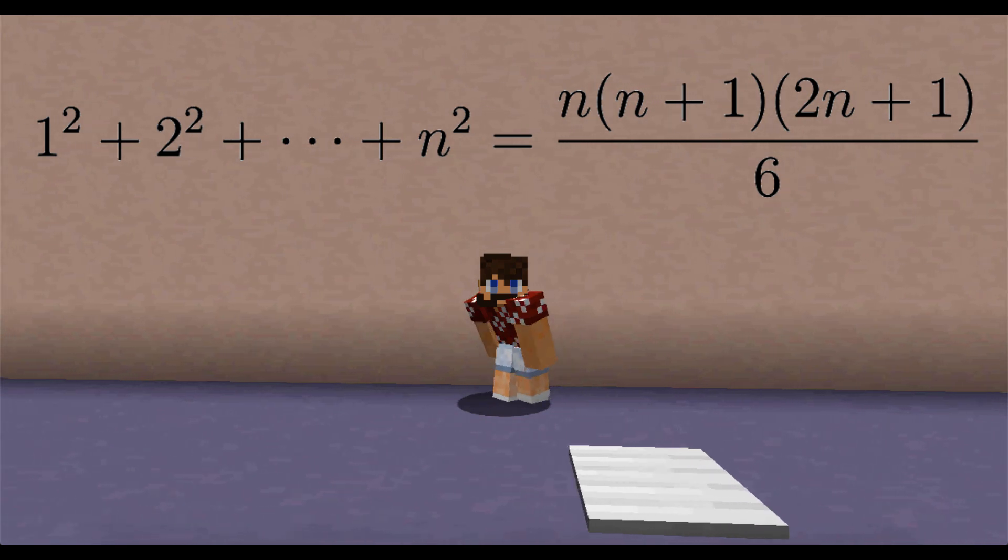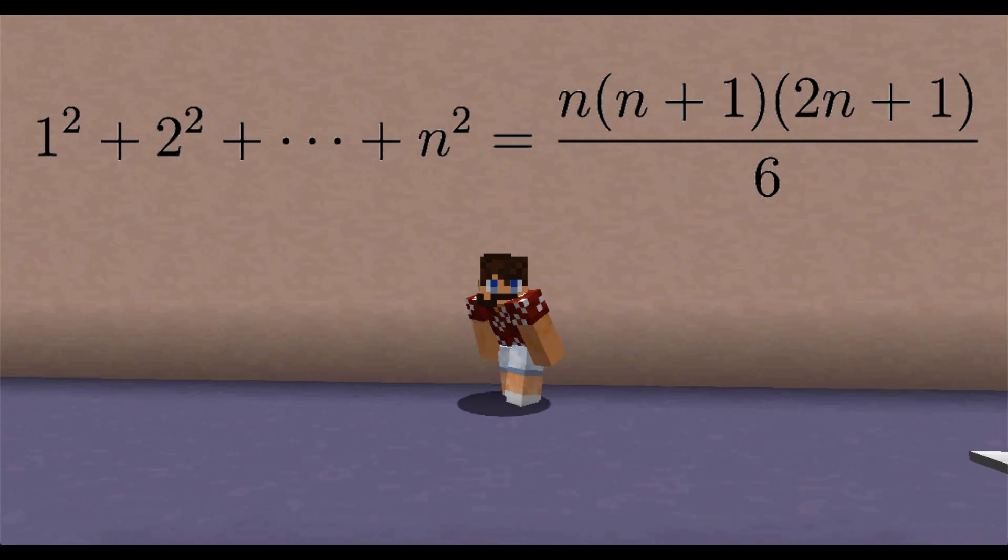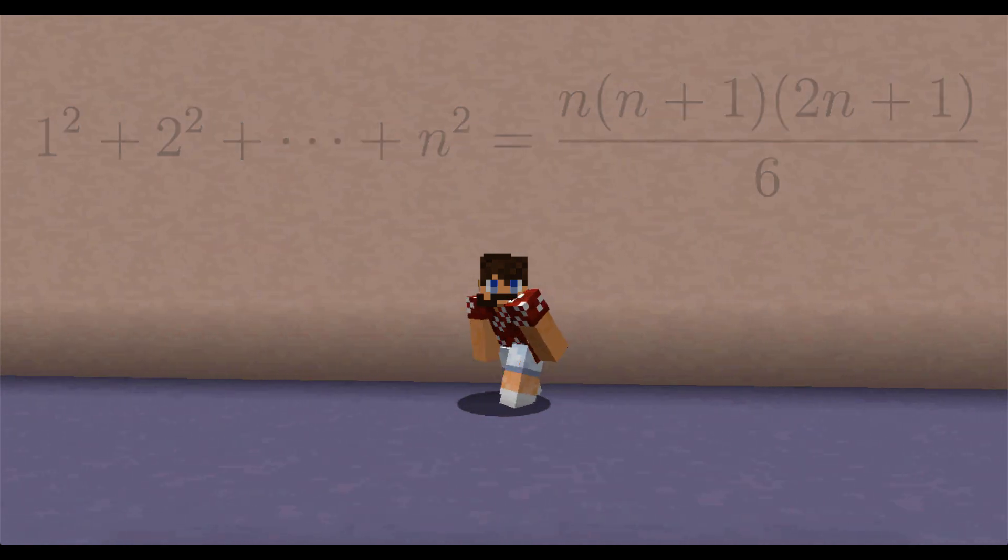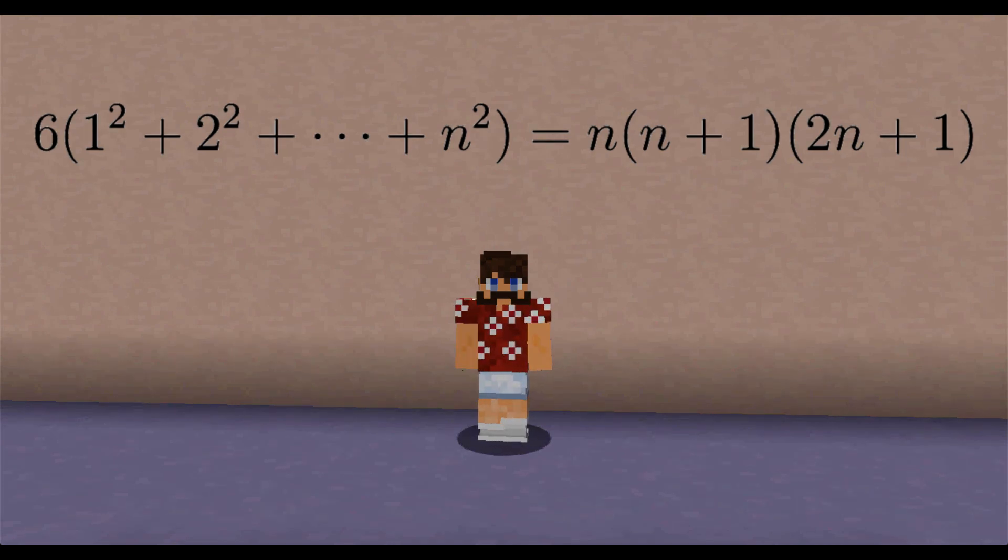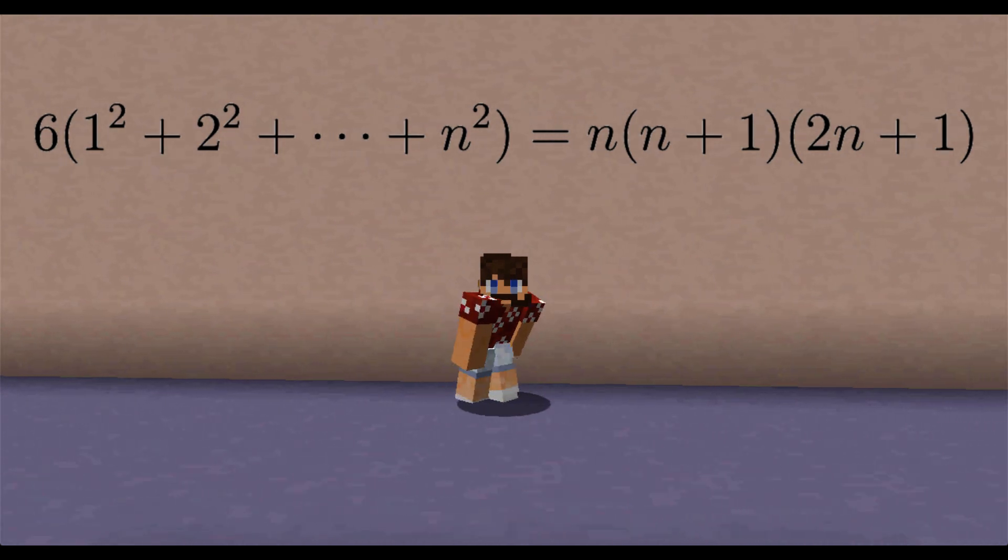Today, I'm going to help you visualize that. In fact, I'm going to show you that 6 times 1 squared plus 2 squared plus all the way up to n squared is equal to n times n plus 1 times 2n plus 1.